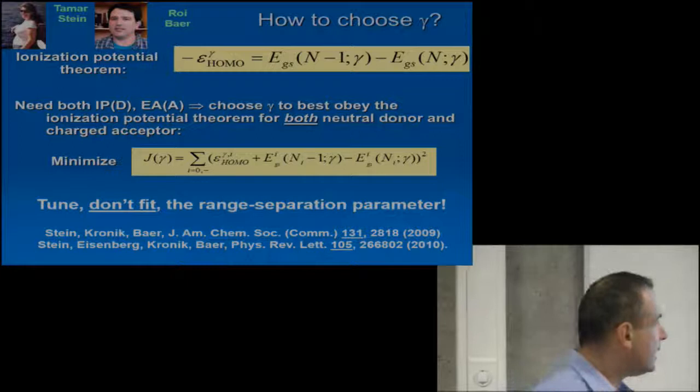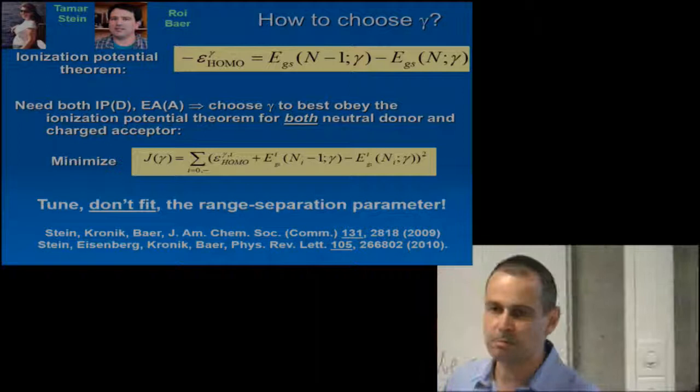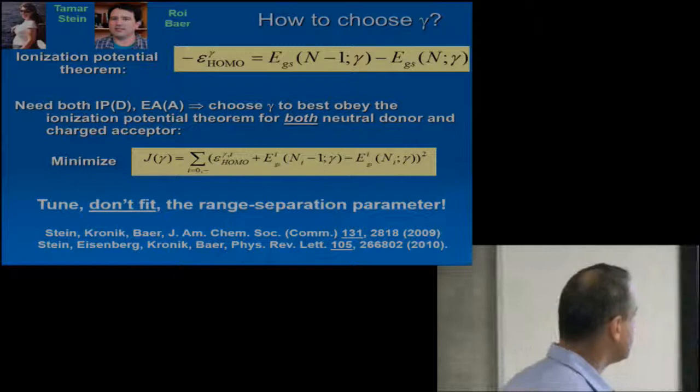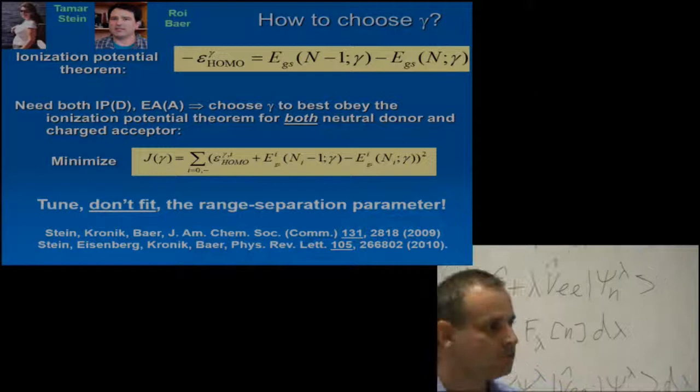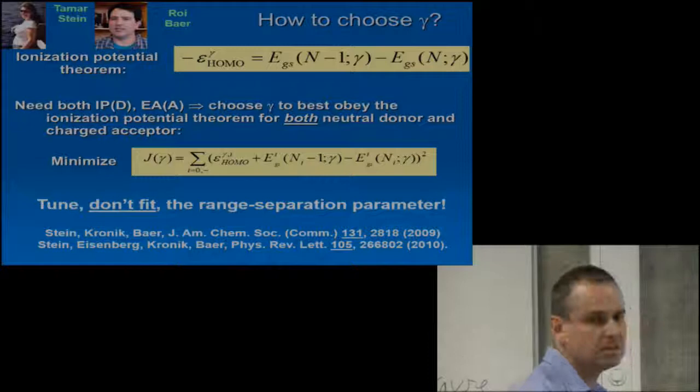The good news is that this way I can determine gamma for each system. The bad news is that it's for each system, which means it may become system dependent, and in fact it does. But the point that I can't emphasize enough is that while we're tuning this range separation parameter, we're not fitting it to anything. This is not an empirical procedure. We do not require information from experiment or from wave function theory. This is just demanding self-consistency within a DFT constraint.